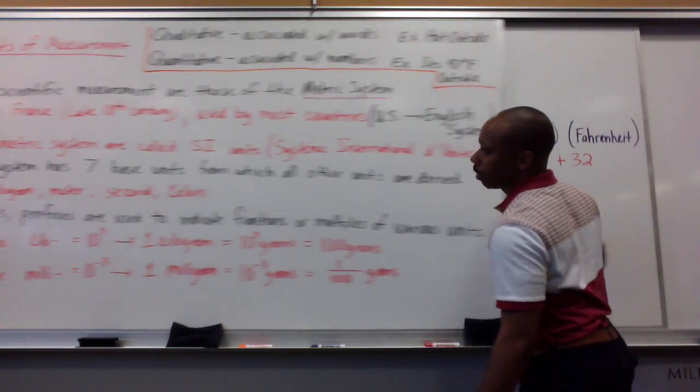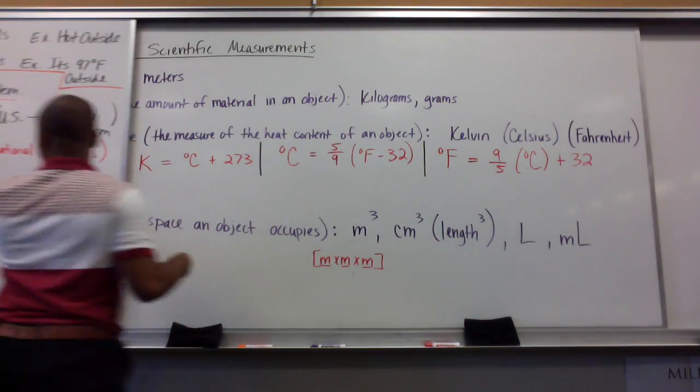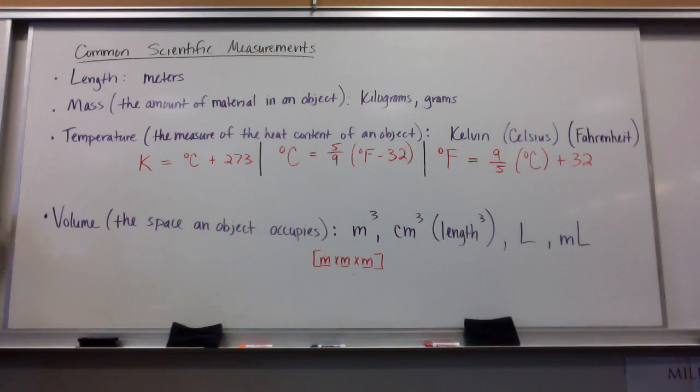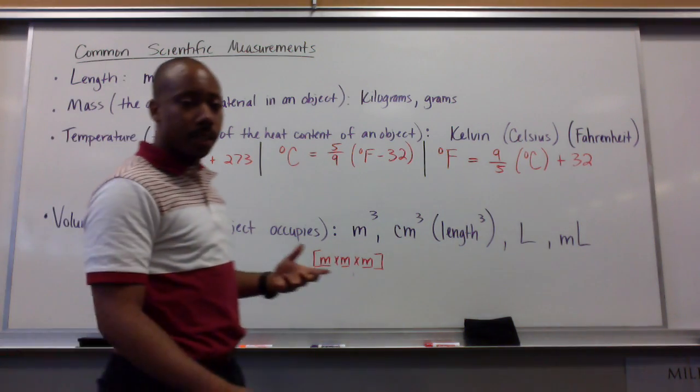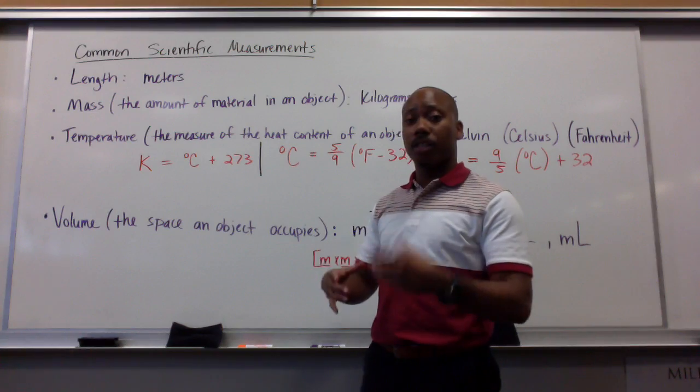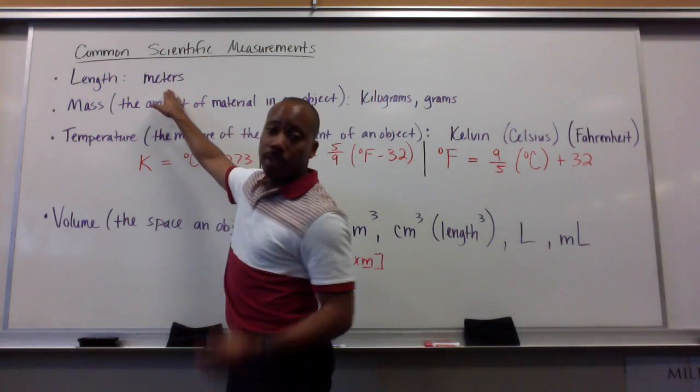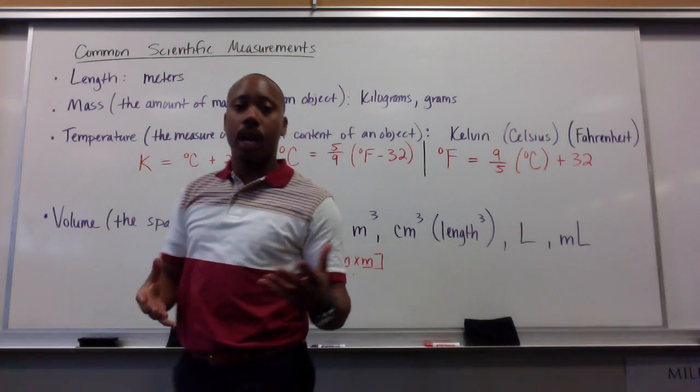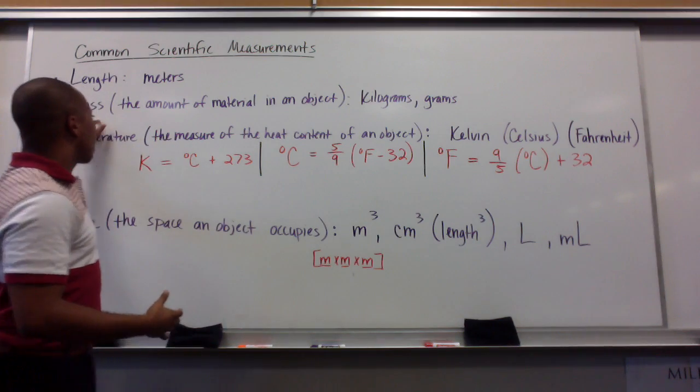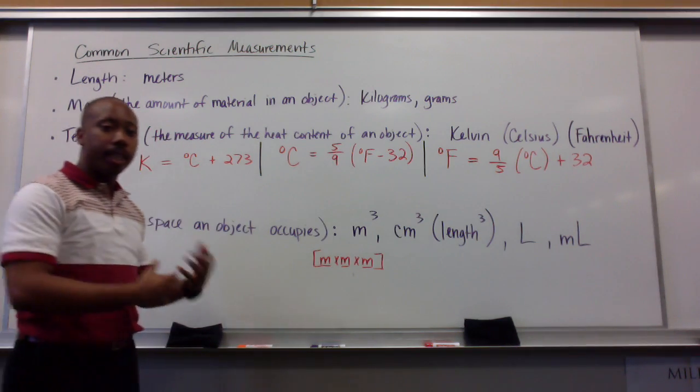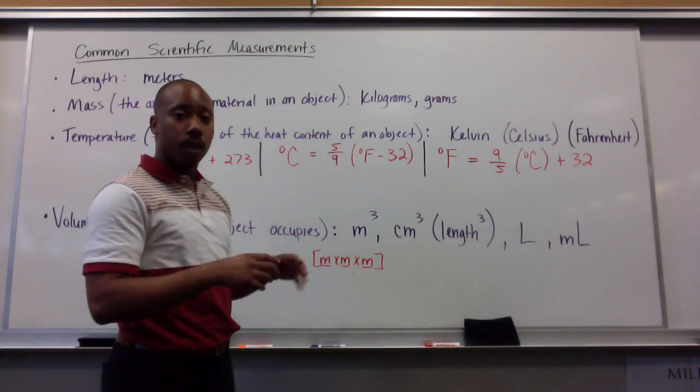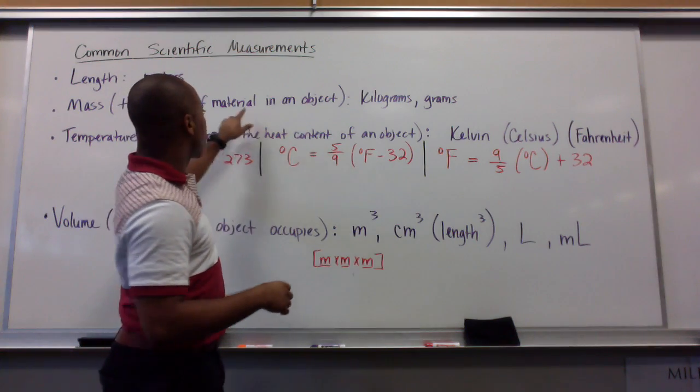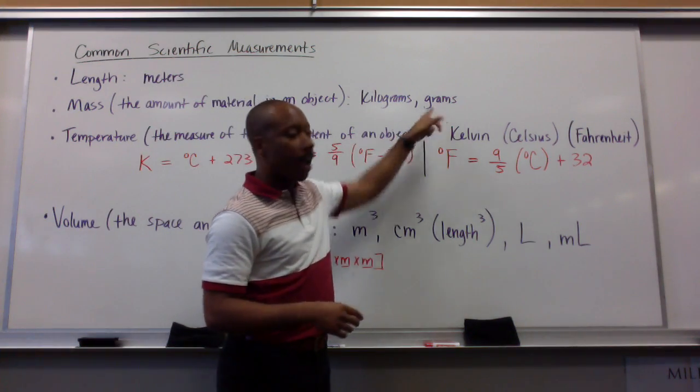Now, let's take a look at some common scientific measurements. We know that length, often times in science, is measured in meters. Those guys who took active physics, you've discovered that already. Mass, which is defined as the amount of material that an object has or in an object, is most commonly measured in kilograms and grams.